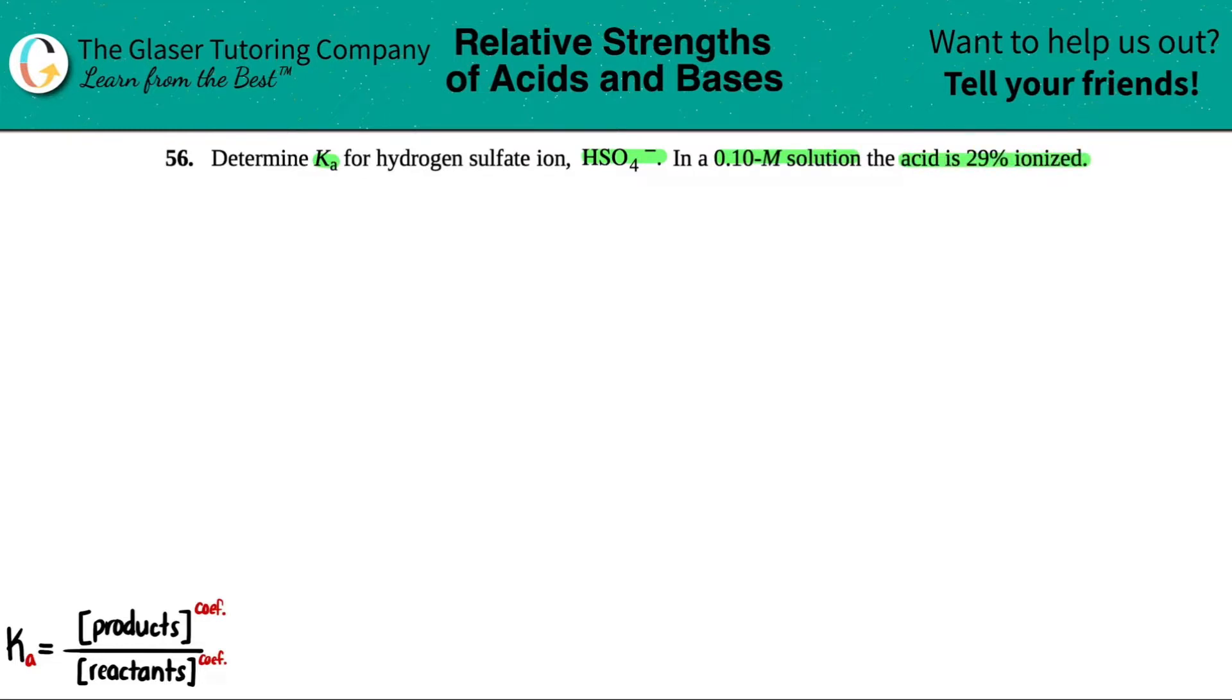Okay, we want to solve for Ka. The A stands for acid. When you're an acid in solution, you can always find a Ka value. They're saying that HSO4 is going to be acting as an acid.